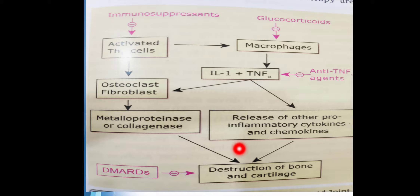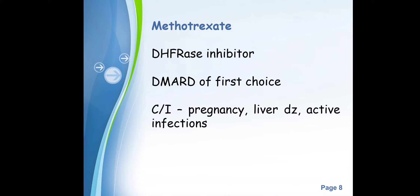In summary, all drugs used for this disease prevent destruction of bone and cartilage. However, remember that all these drugs are for prevention, not a cure for the disease — you cannot completely cure rheumatoid arthritis. These drugs modify the ultimate outcome of the disease by limiting bone and cartilage destruction, but none of them will cure this autoimmune disease.